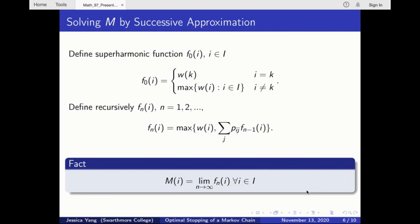A close observation of the sequence f sub n would reveal that the sequence is strictly decreasing, and for every n, f sub n is a superharmonic function that dominates the reward function. Since the sequence is bounded below, the decreasing limit exists and is also superharmonic and dominates wi. An important fact that I proved in my paper is that m in fact equals the decreasing limit of the sequence of function f sub n. And with this fact, we can now devise a function f sub 0 and use it to successively approximate m.